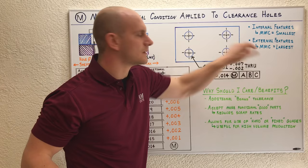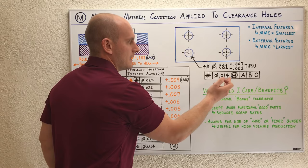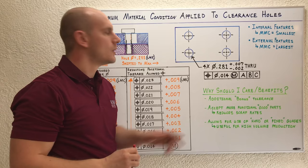We're interested in this clearance hole right here. We've invoked MMC. We know that this now isn't a static fixed value anymore. Instead, this is just our initial value, and as this hole deviates away from maximum material condition, we add that deviation to this positional tolerance as bonus tolerance.